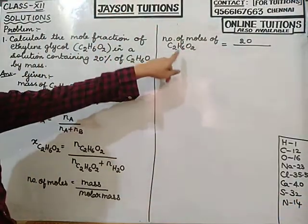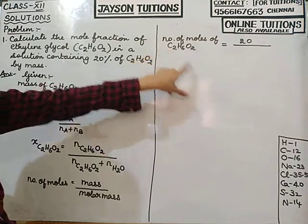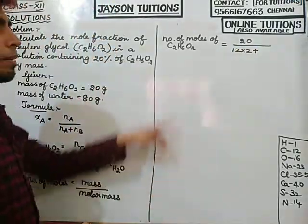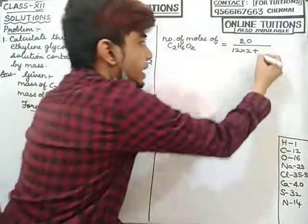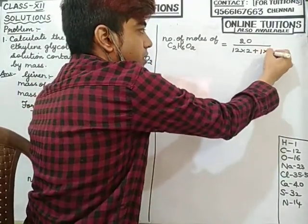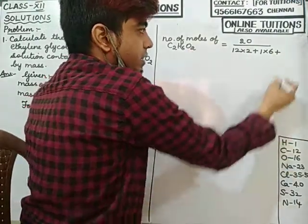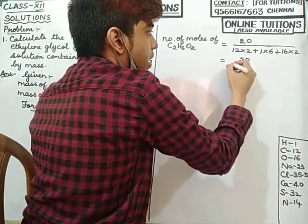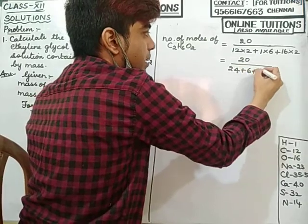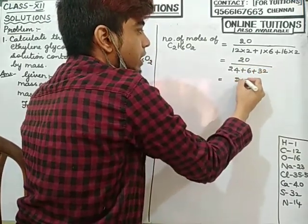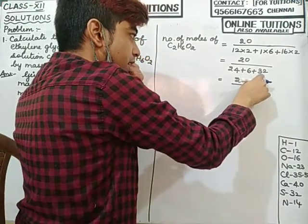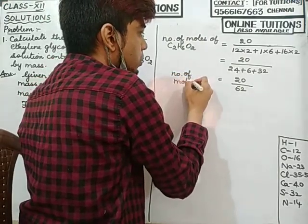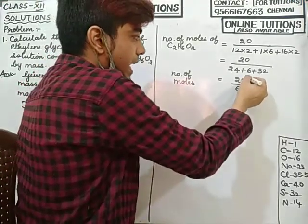So molar mass equals 24 + 6 + 32 = 62. Therefore, number of moles of ethylene glycol equals 20 divided by 62, which simplifies to 0.322 moles.